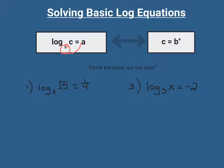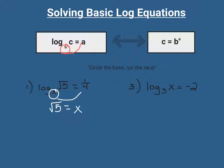Let's take a look at number one. Right now number one is in log form, and we want to get it into exponential form. So we circle the base and run the race. The word log drops off, so we bring down the radical five, and x becomes the base on the other side of the equation. Because it's the base, this one-fourth becomes our exponent. Now from here, all we have to do is solve.